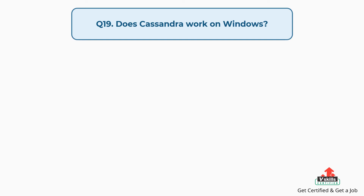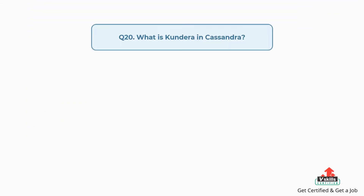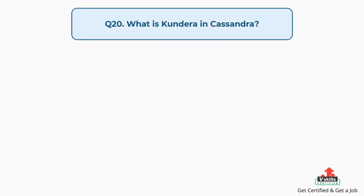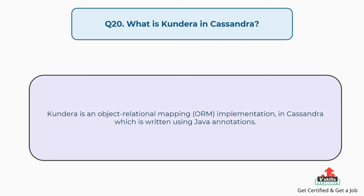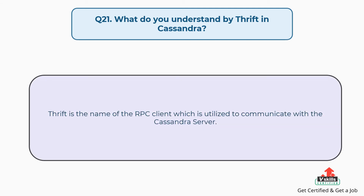Question number nineteen: Does Cassandra work on Windows? Yes, it is compatible with Windows and works pretty well. Now its Linux and Windows compatible versions are available too. Question number twenty: What is Kundair in Cassandra? Kundair is an object relational mapping (ORM) implementation in Cassandra which is written using Java annotations. Question number twenty-one: What do you understand by Thrift in Cassandra? Thrift is the name of the RPC client which is utilized to communicate with the Cassandra server.